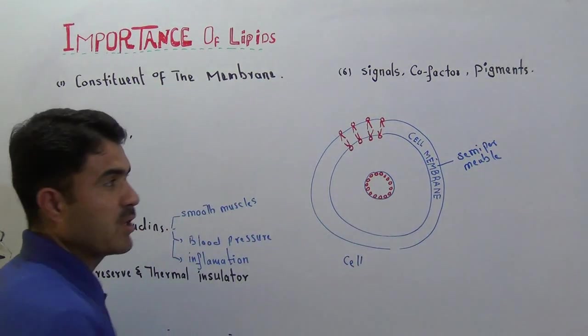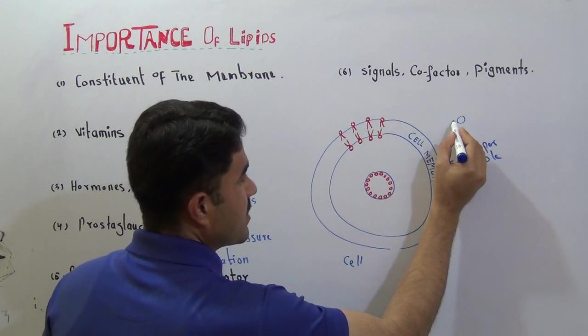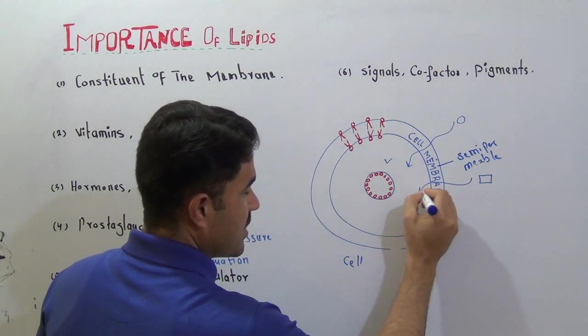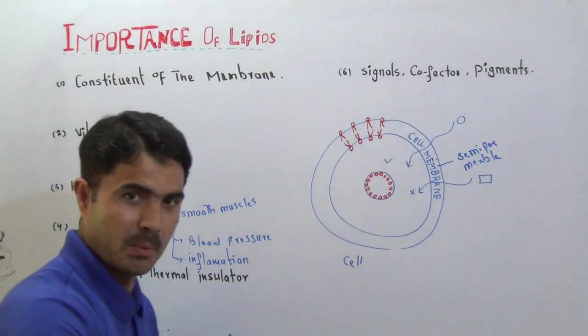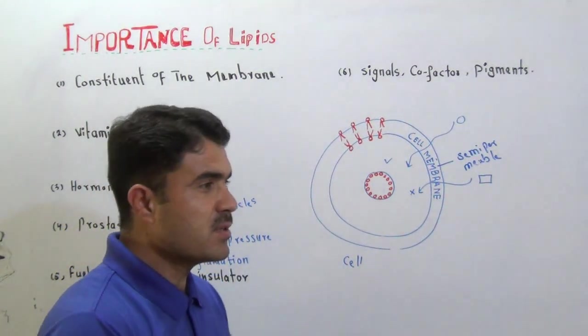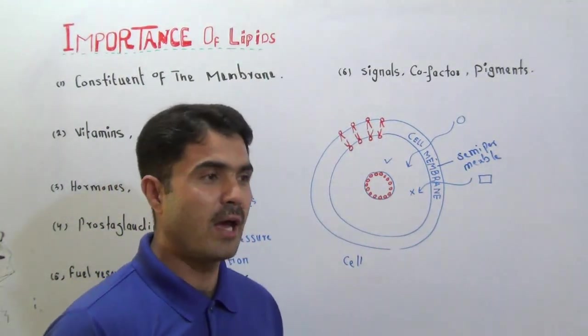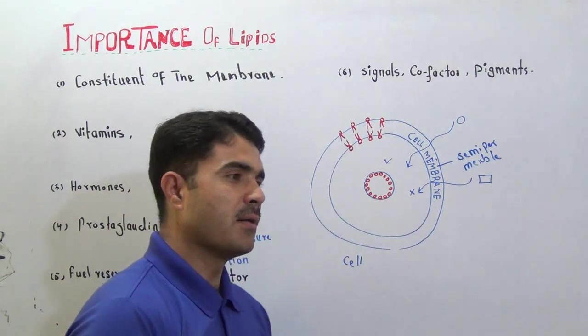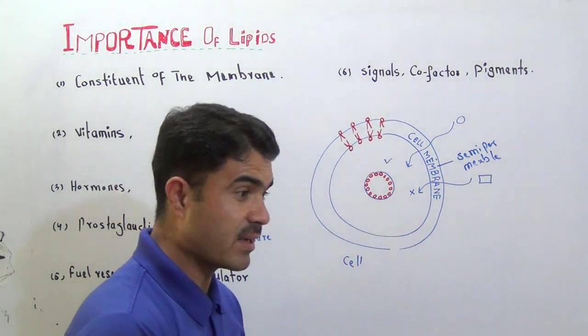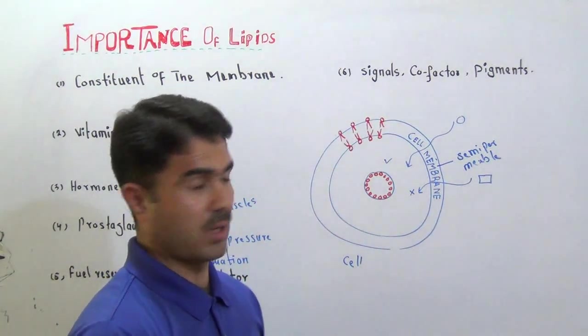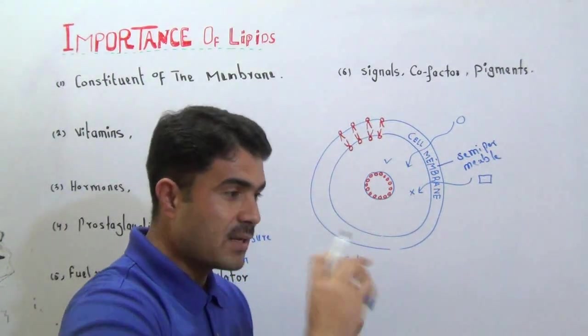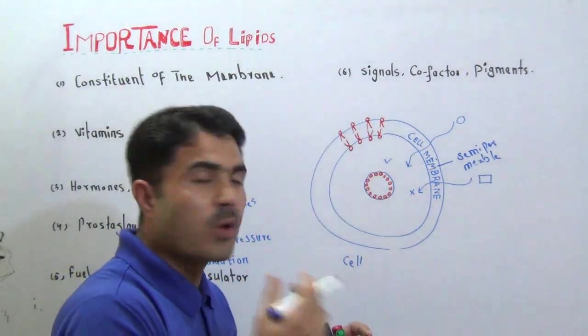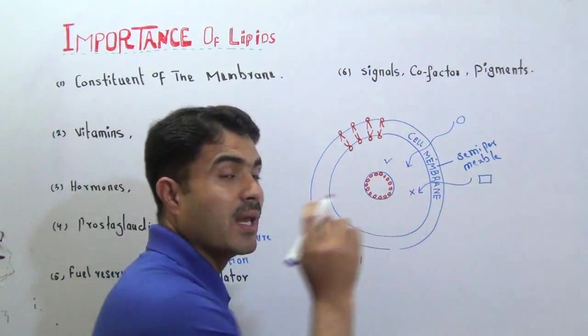The cell membrane is a semi-permeable membrane. We use the word semi-permeable because it allows some molecules to pass through but does not allow some other substances to pass through. So it is a sort of regulation. If you have a factory, a special department, you will definitely hire some security guard at the gate so that he or she will check which person has to come and which has not to come.